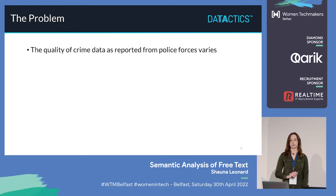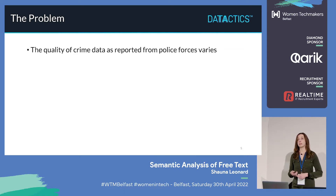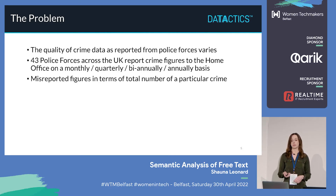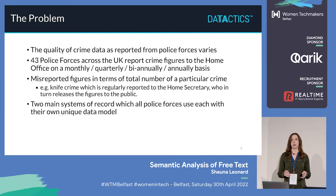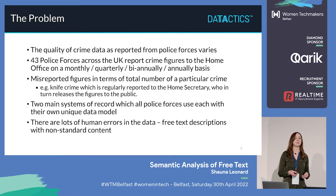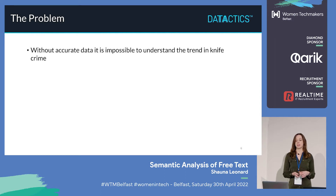A bit of background on the problem: it's the quality of crime data as reported from police forces. Across England and Wales, some forces are better at reporting than others. 43 police forces report figures to the Home Office at different times throughout the year. There are lots of misreported figures in terms of the total number of a particular crime. We started with knife crime and are going to roll out to other different types. There are two main record management systems that forces use, each with their own unique data model, so it's different data across different forces and we're trying to standardise and find the right number of crimes. There's also lots of human errors in the data — free text descriptions when a police officer is typing in witness statements will have misspellings. Without accurate data, it is impossible to understand the trend in knife crime.